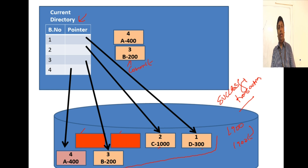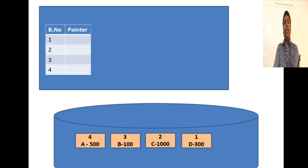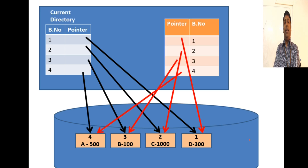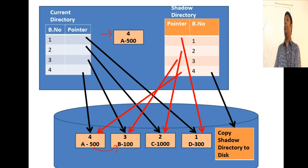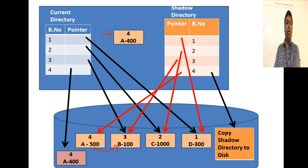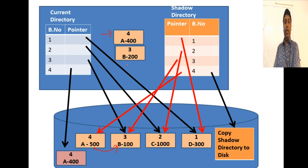Now let's see how the shadow copy helps when a transaction fails. We go back to the beginning: all pointers are set, a shadow directory is created and written to disk before the transaction starts. The transaction again transfers 100 rupees from A to B. Block A is moved to the buffer, 500 is changed to 400, written to a new location, and the current directory updated. Then block B is moved to main memory and being modified when the transaction fails.